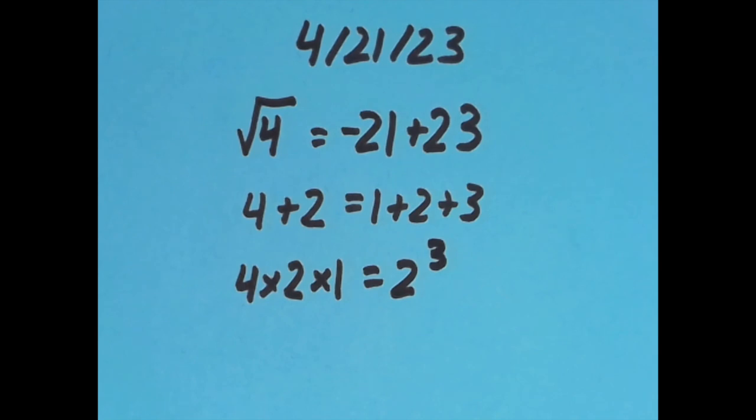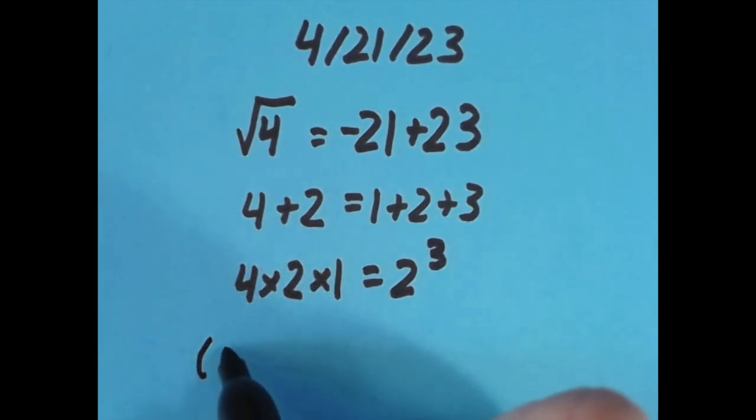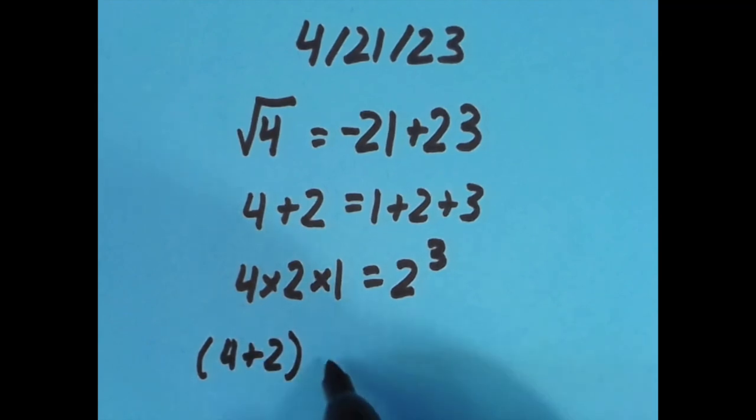And lastly, with the equal sign in the final position, I'm going to do 4 plus 2 first. So I'm going to put that in parentheses to get 6. 6 divided by 1 is still 6. 6 divided by 2 is 3. So that just equals 3.